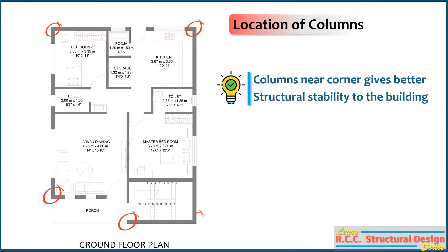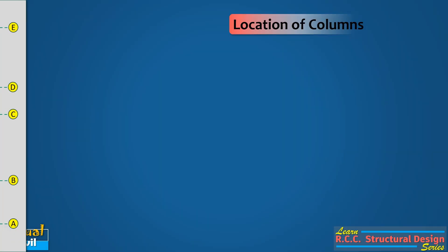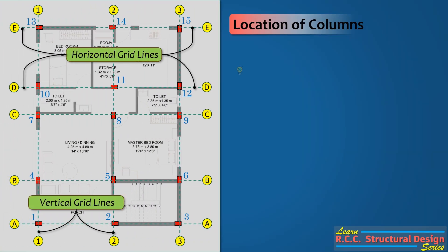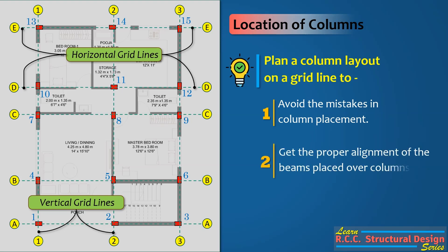Place columns 1, 2, 3, 4, and 5 at the highlighted corners of the building. It is always better to plan a column layout on a grid line to avoid mistakes and place the columns in the right way. This is useful to get proper alignment of the beams placed over the columns and also to get balanced load transfer.